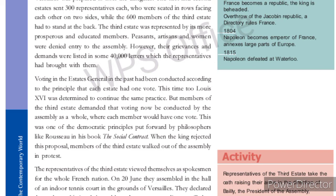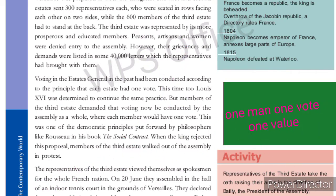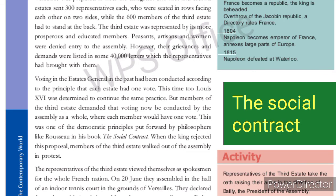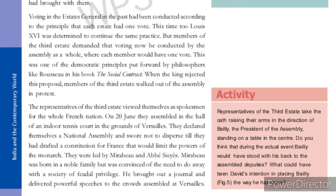The third state demanded a democratic method of voting. The king was determined to continue the old practice, but this time members of the third state demanded that voting be conducted by the assembly as a whole, where each member would have one vote. This idea was given by philosophers like Rousseau in his book 'The Social Contract.' When this proposal was rejected by the king, members of the third state walked out of the assembly in protest.